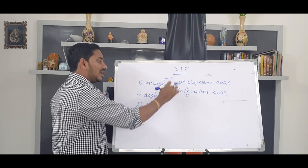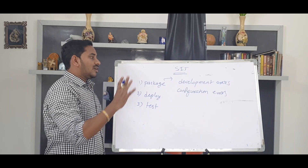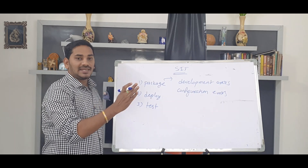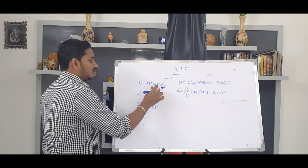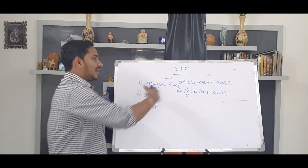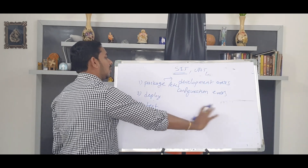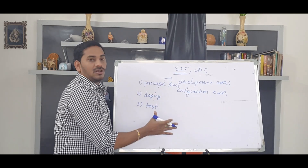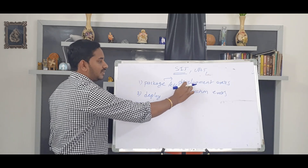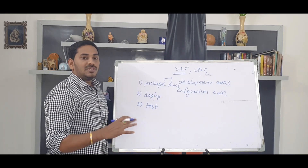In the shift-left process, we need to build and scan the code early. We need to package and test in the environment early. We follow this procedure to build confidence. If there are development errors, you clear them first. Then you clear configuration-related errors. Then you push to production.